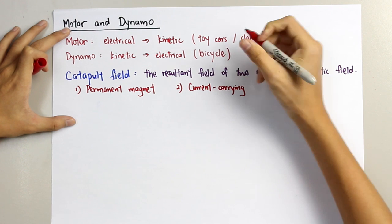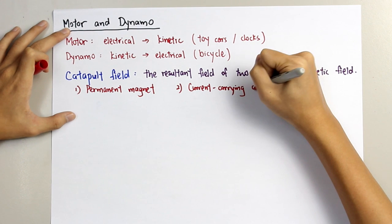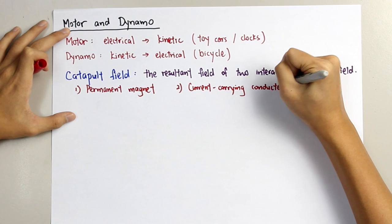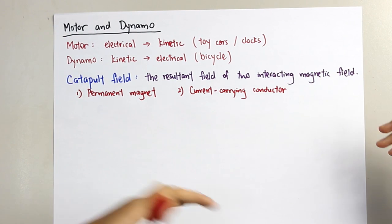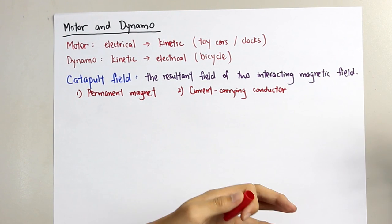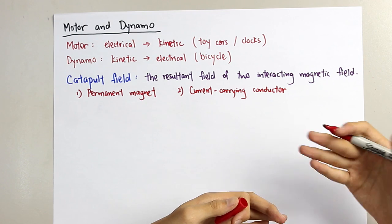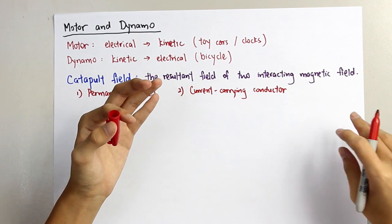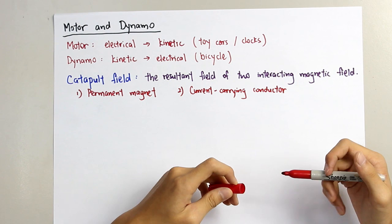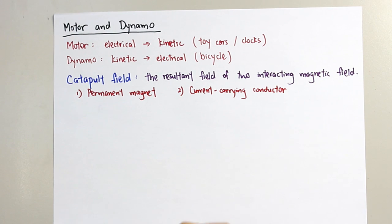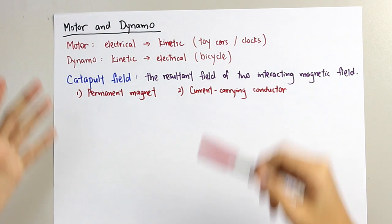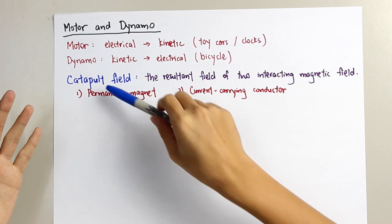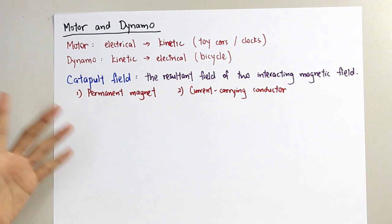So what is the current-carrying conductor which we normally use? It can be a wire. A wire is a conductor which carries a current. I'm going to show you how this catapult field works.